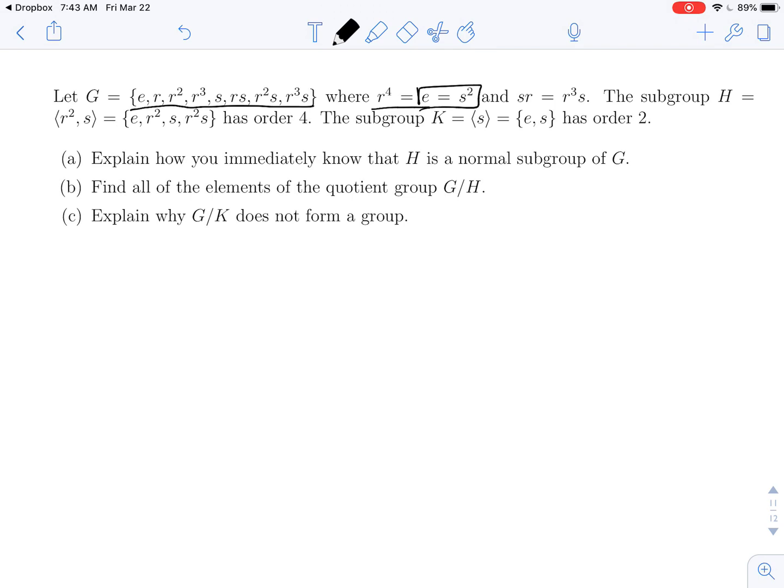And then you have this relationship which tells you how to pass an S through an R. So if I have S times R, I can move it to the other side, but then the R turns into an R cubed. So this relationship right here actually tells you G is non-abelian.